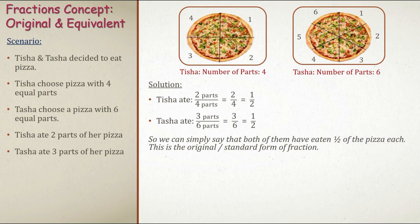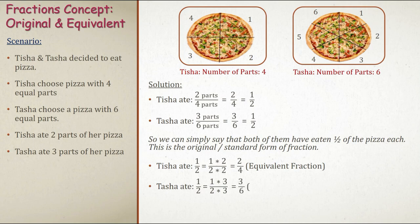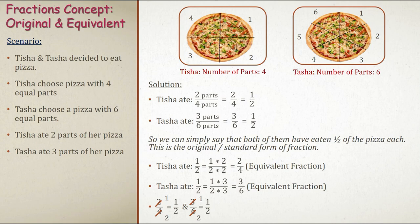Both have eaten half of the pizza, which is the original and standard form of fraction. If we convert this original form into equivalent parts: Tisha ate 2 parts, so we multiply 1 by 2 and denominator 2 by 2, giving 2 by 4. Tasha ate 3 parts, so we multiply numerator and denominator by 3, giving 1 by 3 equals 3 and 2 by 3 equals 6. So 2 upon 4 and 3 upon 6 are equivalent fractions, both equal to half.